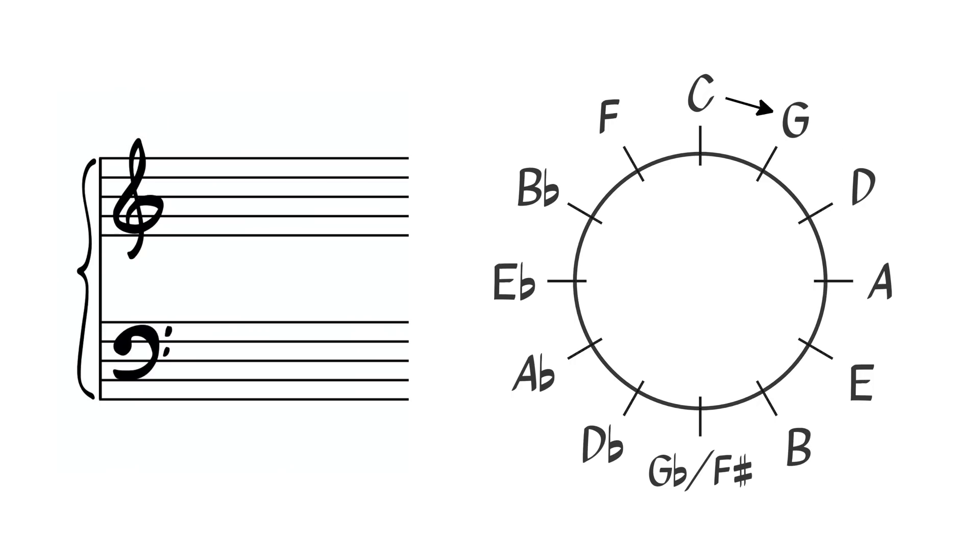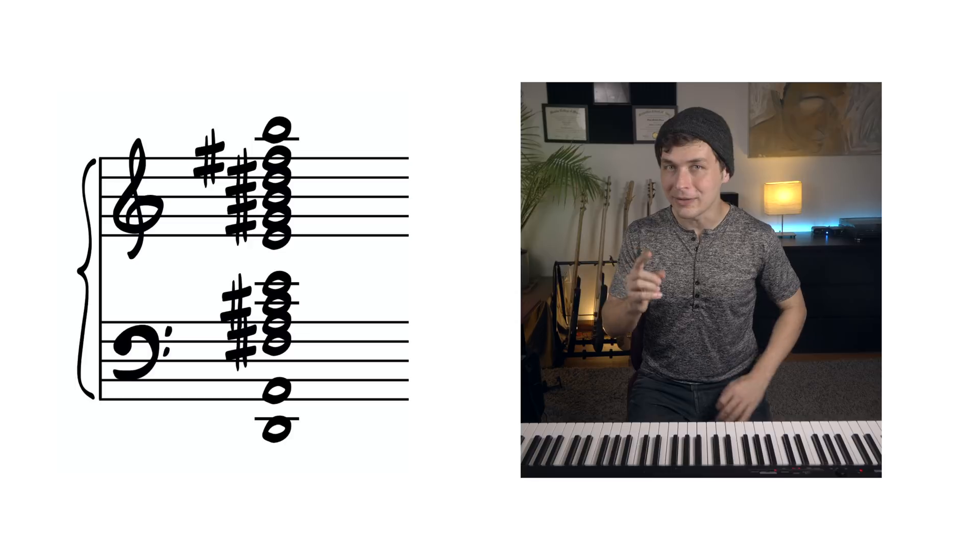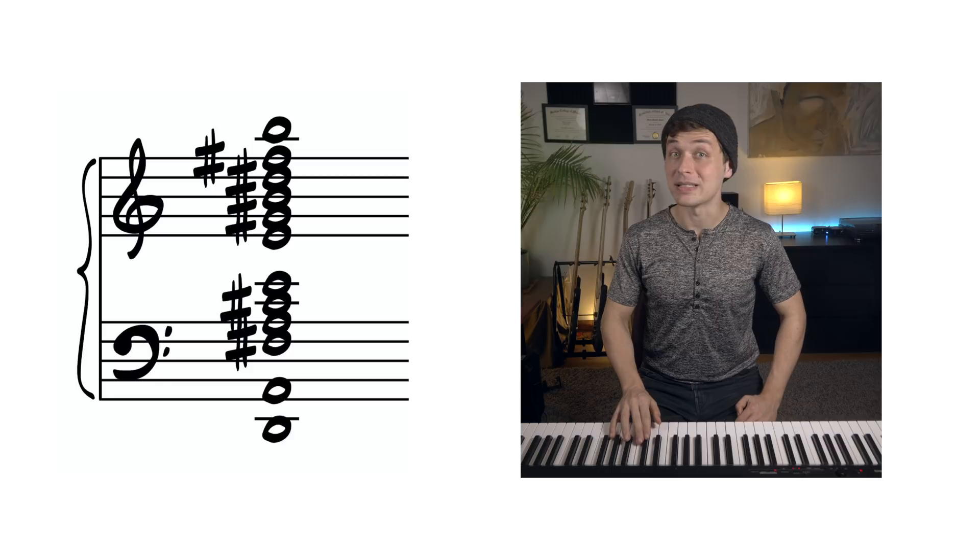So the trick here is to chain a series of four major triads clockwise around the circle of fifths. So if we start on D, we'll have a D major chord, then an A major, E major, and then finally a B major. The resulting harmony sounds warm and open and airy.